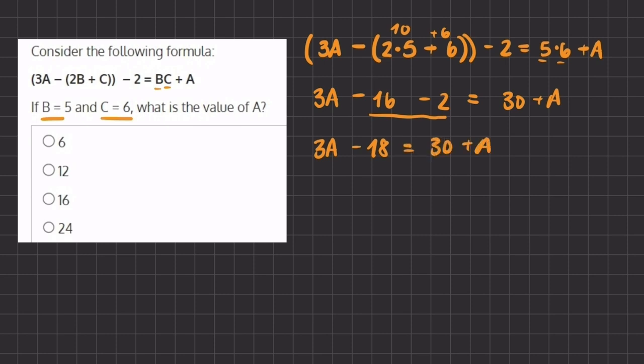Now we can move all of our a's to the left hand side and all of our numbers to the right. So let's subtract a on both sides and we will add 18 on both sides.